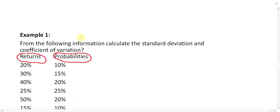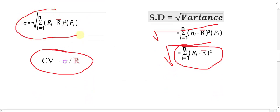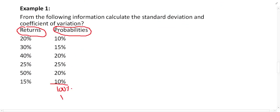We know which formula to use. The formula for standard deviation involves: the square root of the sum of (r minus r-bar) squared times p. And the formula for coefficient of variation is also given.